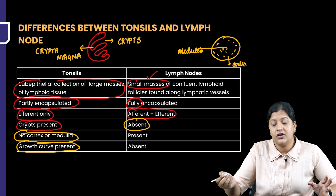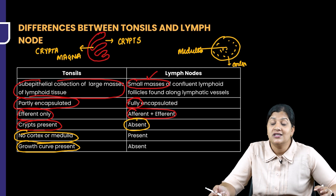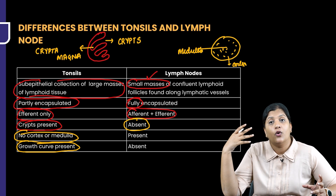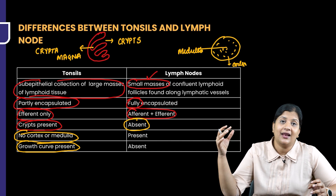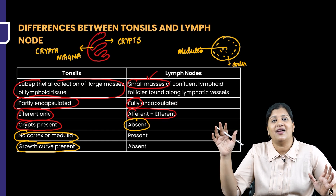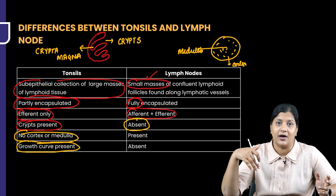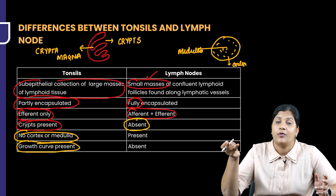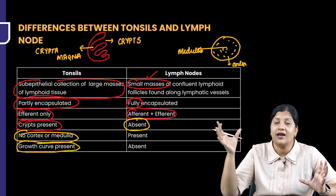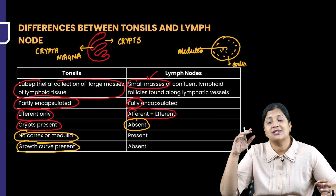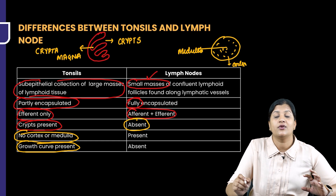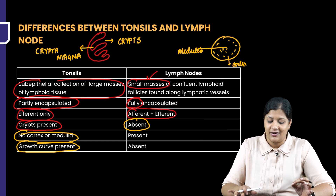A growth curve is present in tonsils. Tonsils are known to undergo increment in size, which is a natural history of the tonsil. Over a period of time, they can persist and might not even regress. But lymph nodes do not have any such natural history — they only enlarge when there is infection or proliferation due to lymphatic disorders, and not as a part of a physiological process. Tonsils, however, can undergo enlargement as a part of physiological process.